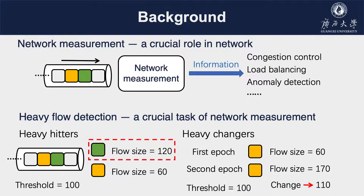Heavy flow includes heavy hitters and heavy changers. Heavy hitters are flows with large flow size, and heavy changers are flows with high changes of flow size in two epochs. For example, the flow size of flow green is 120, which is larger than the threshold, so green is a heavy hitter in the first epoch. The flow size of flow yellow is 60 in the first epoch and 170 in the second epoch, so the change is 110, larger than 100, making flow yellow a heavy changer.